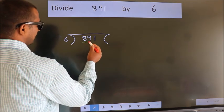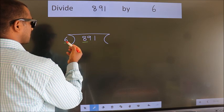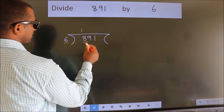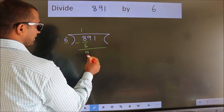Here we have 8, here 6. A number close to 8 in the 6 table is 6×1=6. Now we should subtract. We get 2.